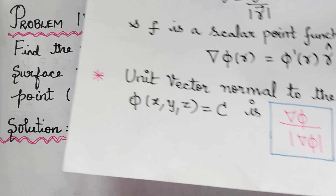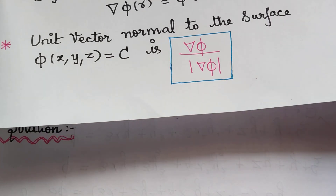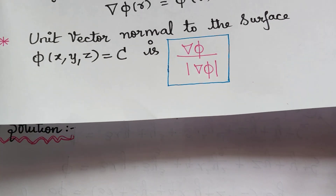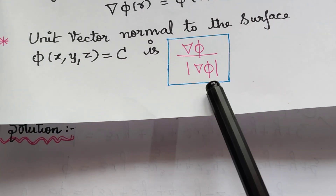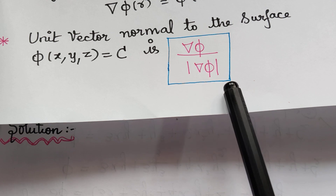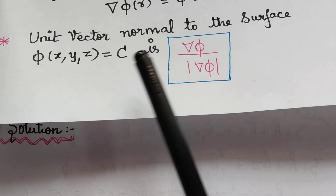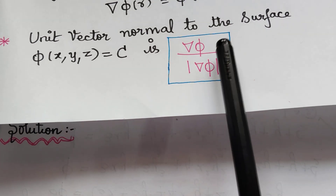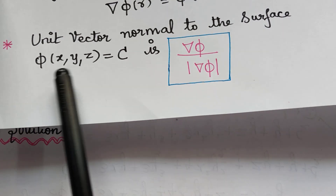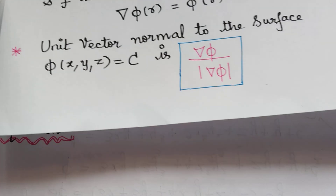The formula to find the unit vector normal to the surface is ∇φ divided by the modulus of ∇φ. Using this, we can find the unit vector normal to the given surface.